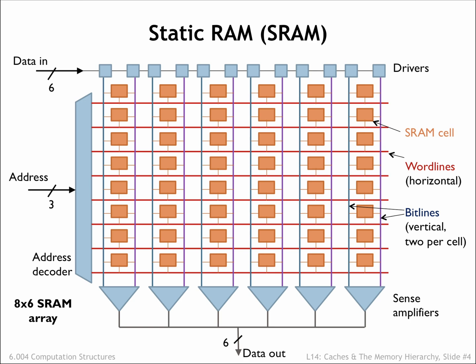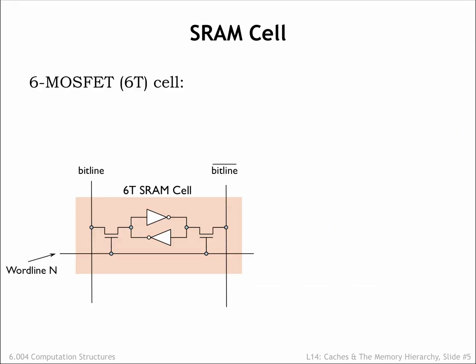Larger SRAMs will have a more complex organization in order to minimize the length and hence the capacitance of the bit lines. The heart of the SRAM are the bit cells. The typical cell has two CMOS inverters wired in a positive feedback loop to create a bistable storage element.